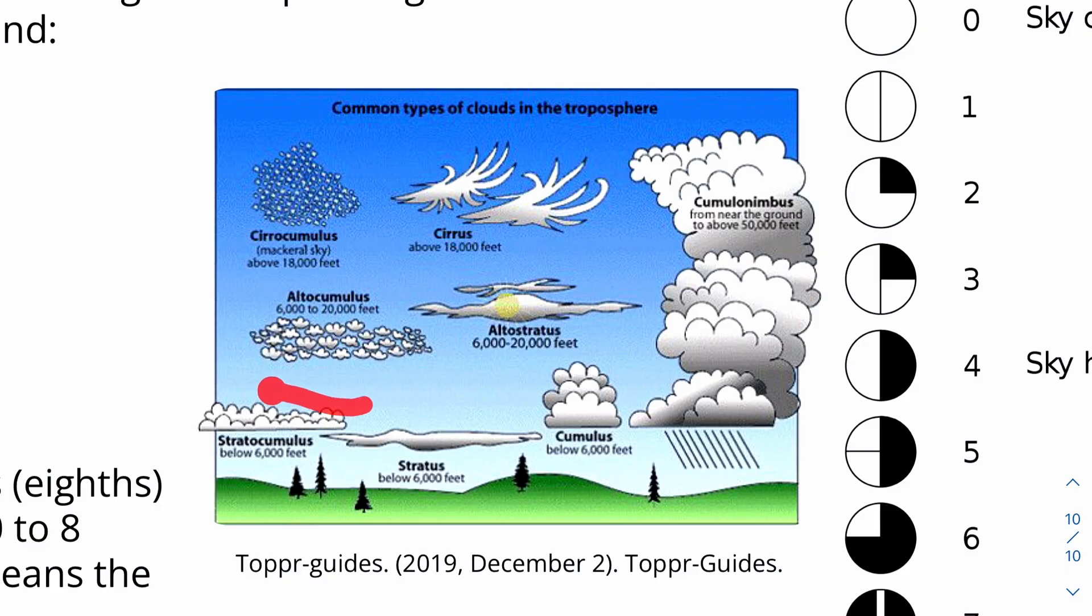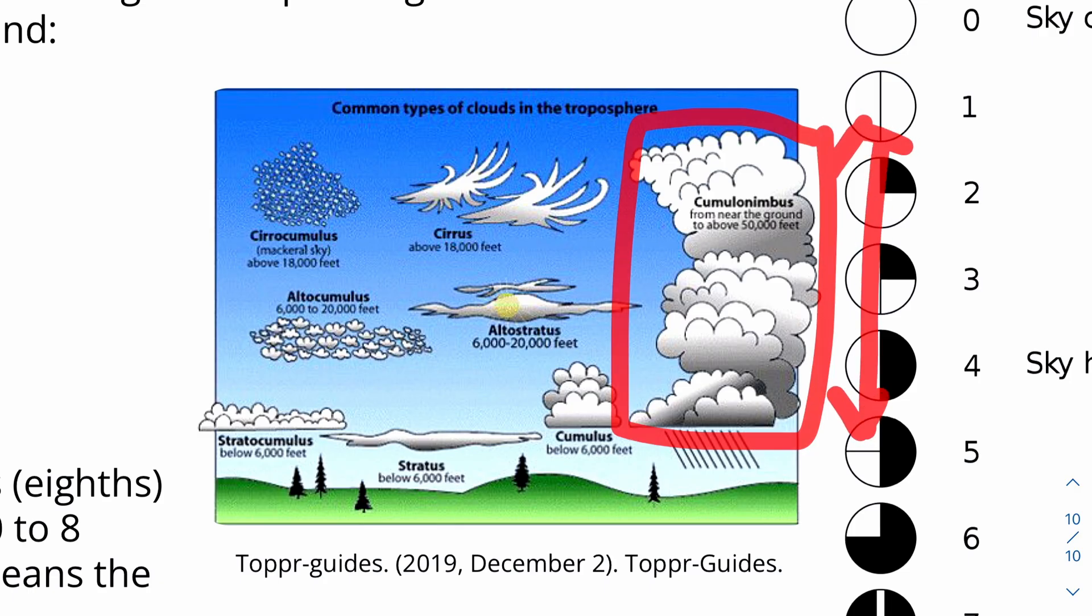Then we have also stratocumulus, which basically relates to the shape and the size. And then we have cirrus at the top. And then this one right here, we have cumulonimbus, which is basically stretched across the whole three layers. And this is associated with storm clouds.